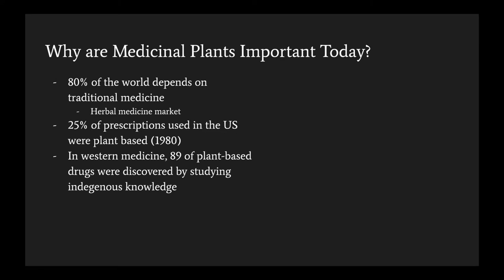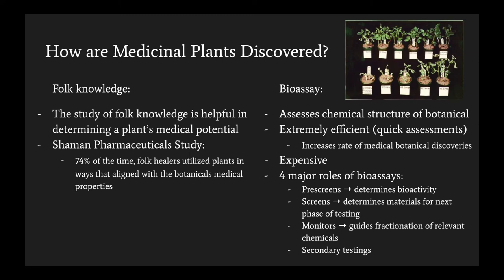As one can see, the medical impacts of plants are not just of economic importance but of importance to the collective well-being of humanity. Folk knowledge can be a huge indicator of whether a plant has medicinal properties, and by studying a variety of indigenous systems, we can continue to make advancements in modern medicine. It's crucial that we take the time to learn about how different cultures utilize herbs. This was emphasized in a study by Shaman Pharmaceuticals, which found that 75% of the time the uses of plants by folk practitioners were aligned with the found medicinal properties.